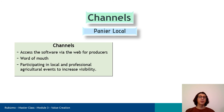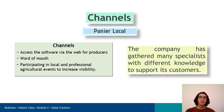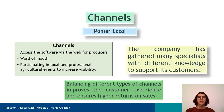Back to the case, customers have accessed the software via the web, and word of mouth has helped the company to be seen in the market. Furthermore, the company participates in local and professional agricultural events to increase visibility. Internet can sometimes damage a business due to the lack of face-to-face interaction, and therefore it can reduce the likelihood of customer loyalty. So in addition to the internet, customer availability and digital knowledge are important. In this case, the company has gathered many specialists with different knowledge to support its customers. Overall, it has been suggested that keeping a balance between different types of channels can improve the customer experience and ensure higher returns on sales.